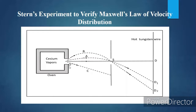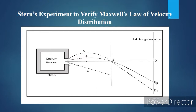Higher velocity means higher range. The molecules traveling along curve A will reach D1, so the range of molecules reaching D1 is more. The range of molecules reaching D2 is less. Atoms moving along curve A cover more distance and reach position D1 along the detector wire.